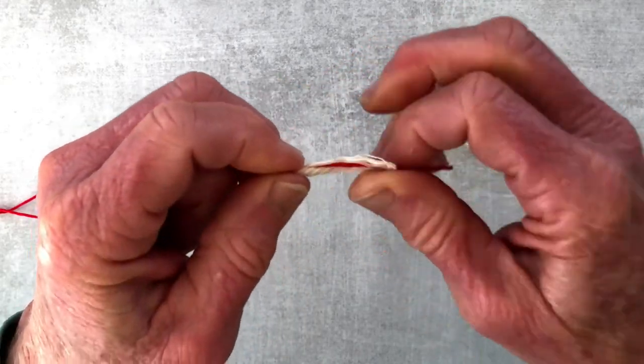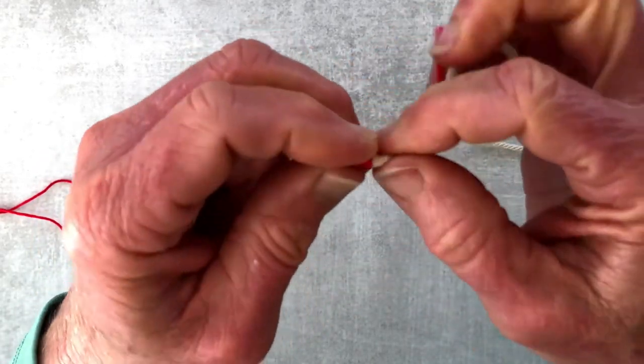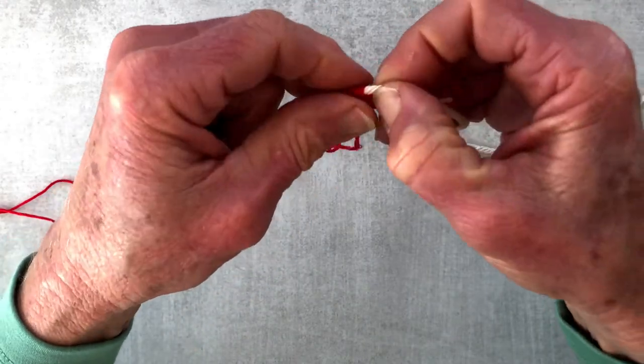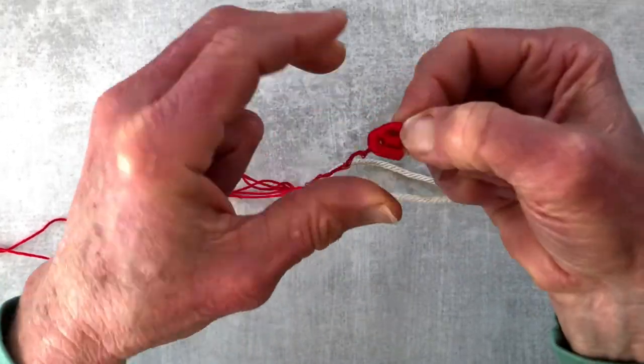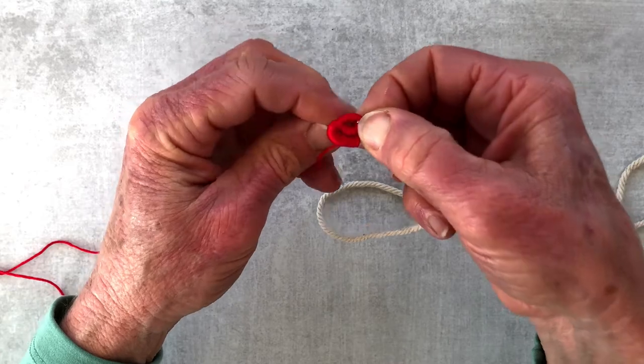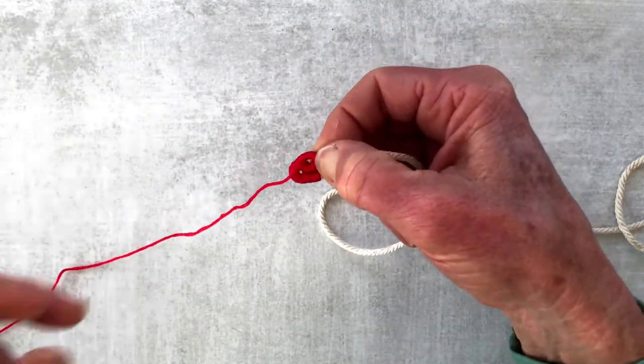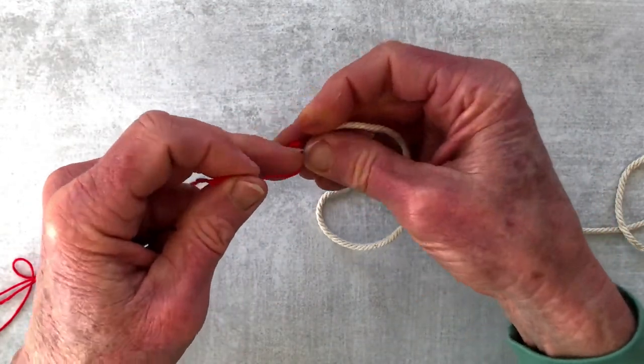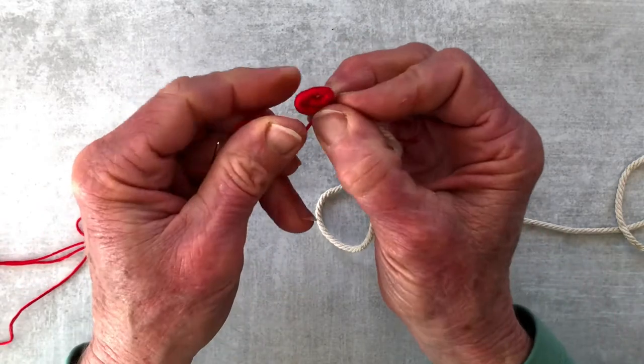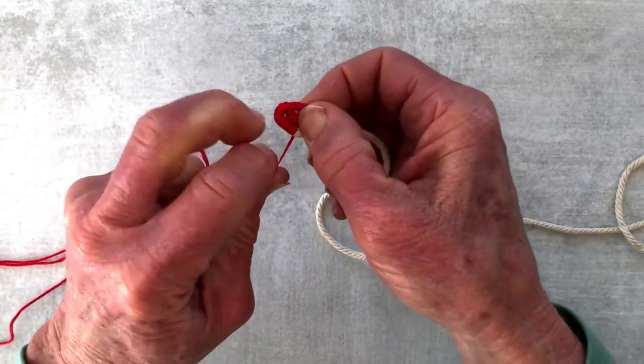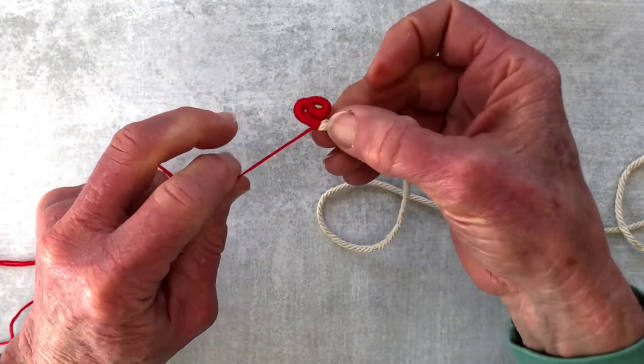I'm going to pull it tight. I don't want any cord showing through. Once again, coming up from the center around the top to the back side of the other cord on top. And wind it some more.